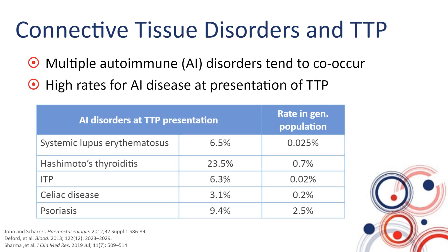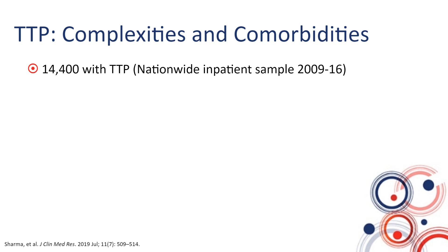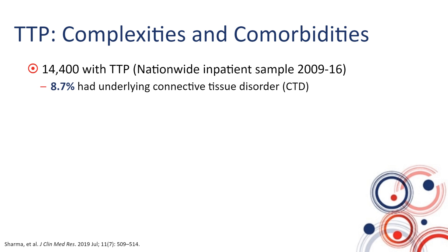For example, in a study from Germany, rates of multiple autoimmune disorders such as systemic lupus, Hashimoto's disease, ITP, celiac disease, and psoriasis were much higher than expected in the general population. The rate of lupus was 6.5% compared to 0.025% in the general population. In a study from the United States using a nationwide inpatient sample, 8.7% of patients admitted with TTP had an underlying connective tissue disorder or autoimmune disorder.